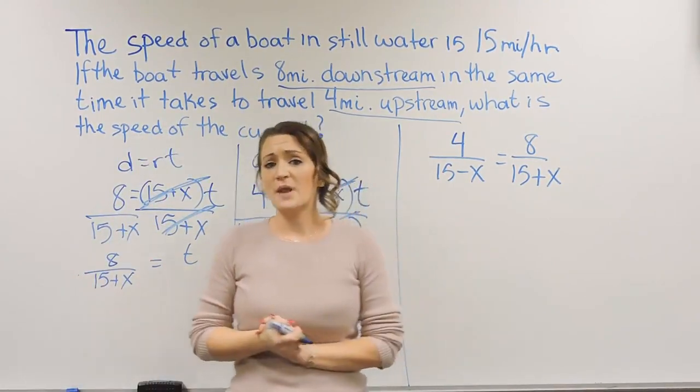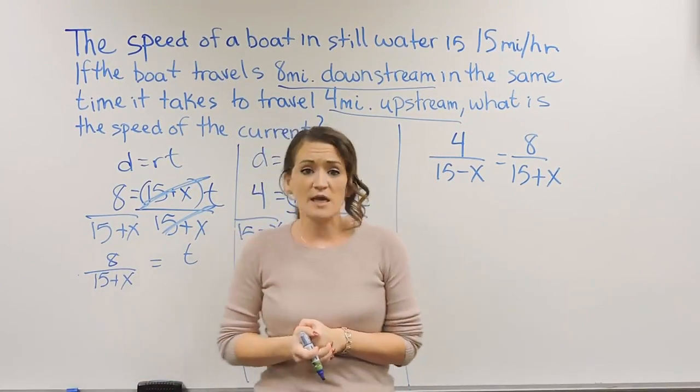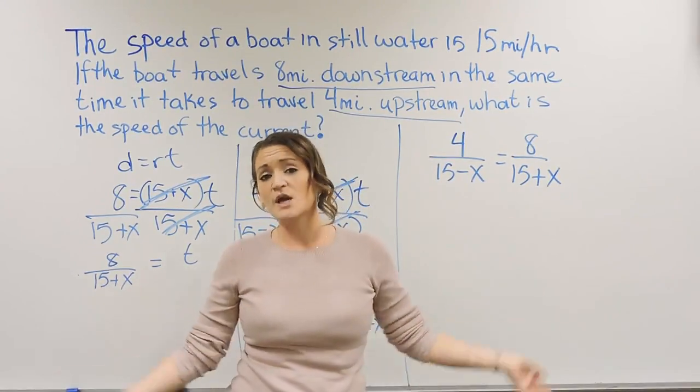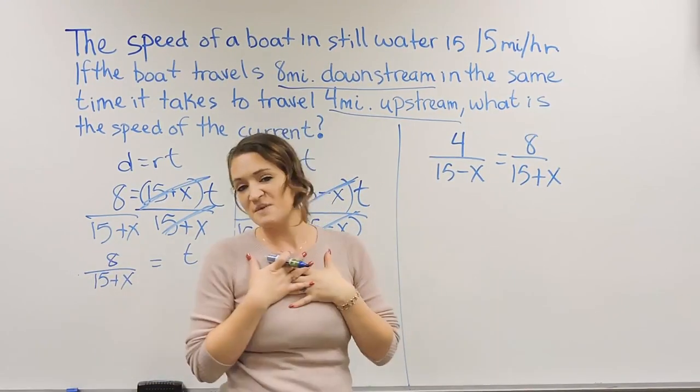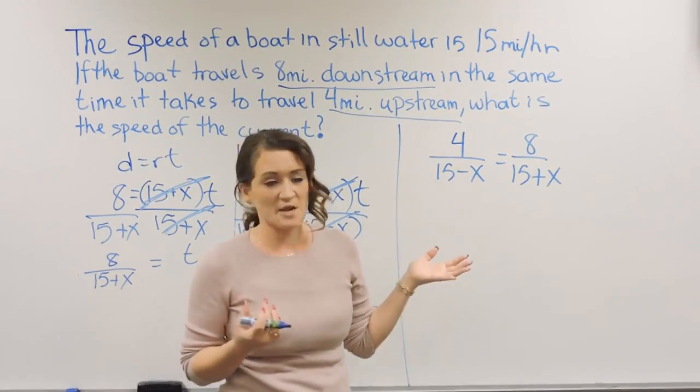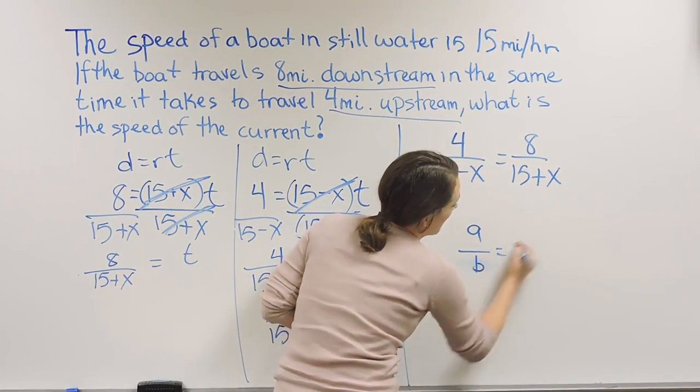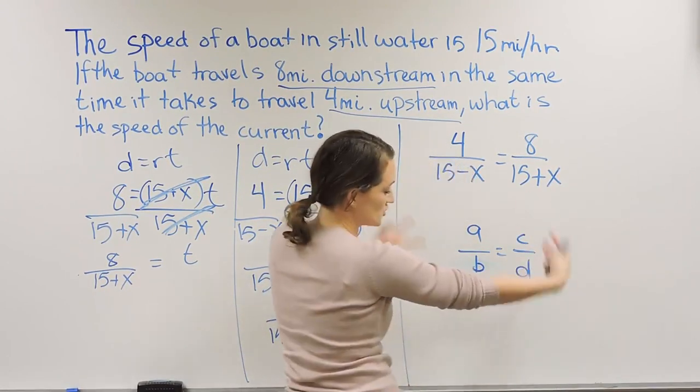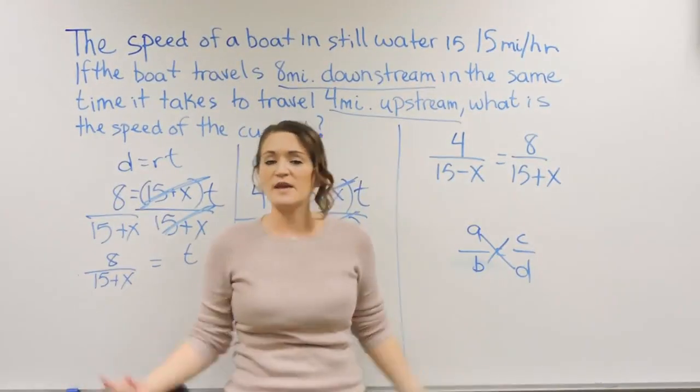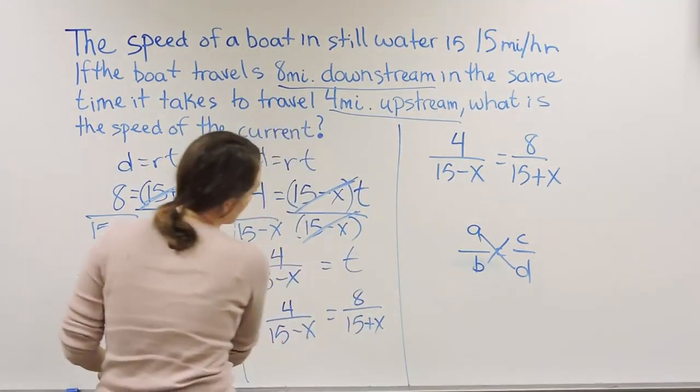Another way that we can look at it is the fact that this is set up as a proportion, and we could also cross multiply. That tends to be the way that I prefer to solve these here when it's in this specific setup here. Remember that we can cross multiply anytime we have two ratios, two fractions set equal to each other. It gives us a proportion, and we can solve any proportion by cross multiplying.